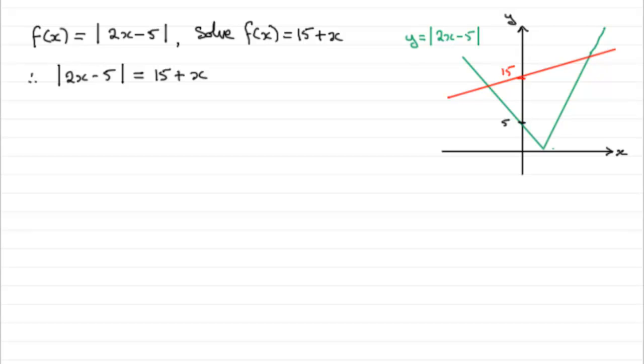So, our solutions to this equation, let's just mark this in, by the way, as y = 15 + x. Our solutions to this equation are going to be found at the two points of intersections of the graphs. It will be the x value that corresponds to that, that will be that one, and the x value that corresponds to that point, which will be somewhere down here. Let's call these points A and B.